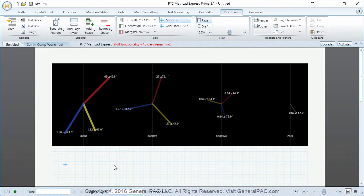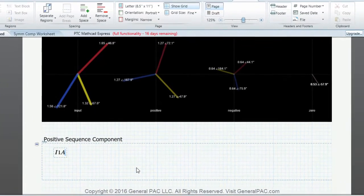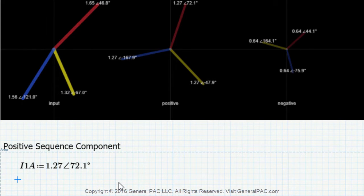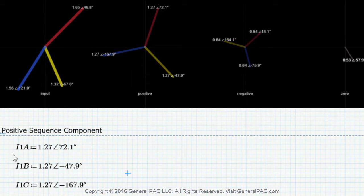Let's define our symmetrical component phasors. The positive sequence component for phasor A is equal to 1.27 at the angle of 72.1 degrees. The positive sequence component for phase B is equal to 1.27 at the angle of negative 47.9 degrees. And the positive sequence component for phase C current is equal to 1.27 at the angle of negative 167.9 degrees. So now we've defined the positive sequence component.